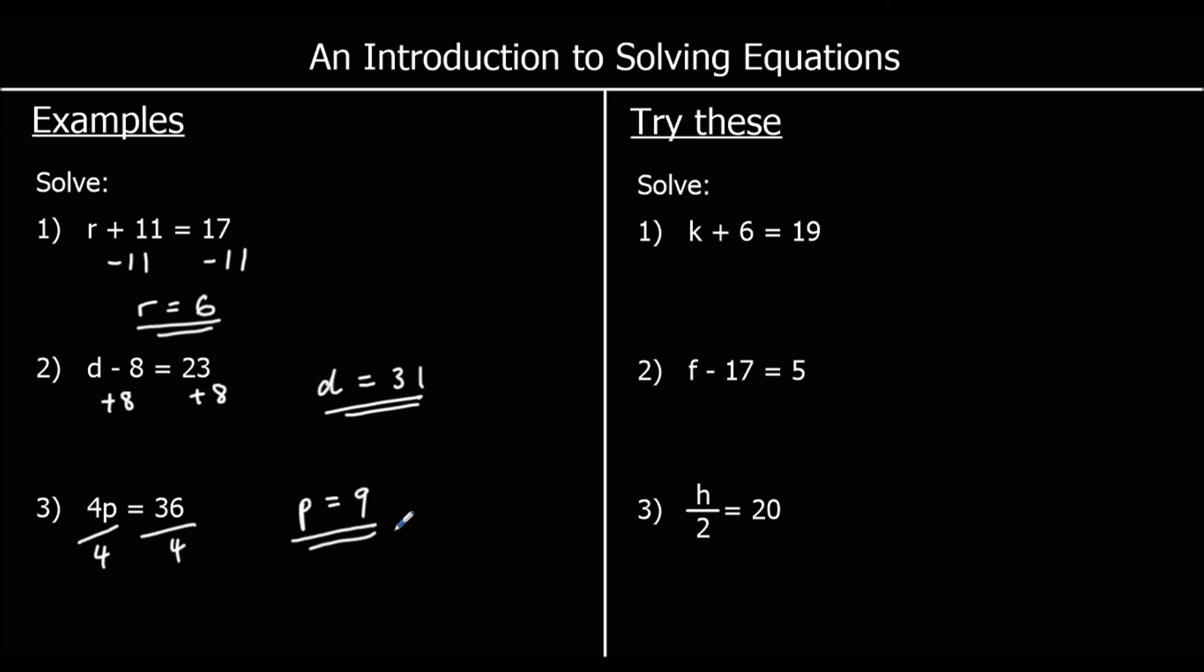Okay, 3 for you to try. So pause the video and give them a go. For the first one, we've got K plus 6 equals 19. To get K by itself, we can subtract 6 from both sides. So K is 19 take away 6, which is 13.